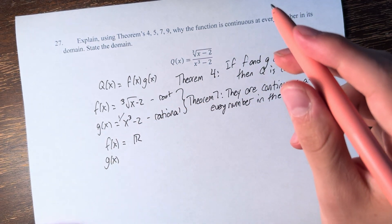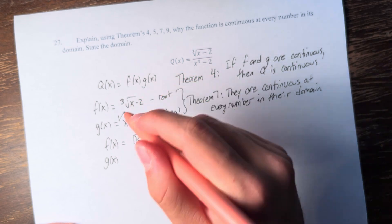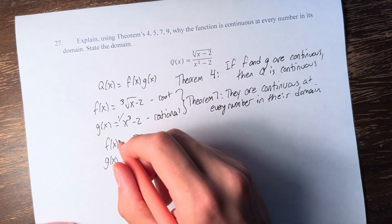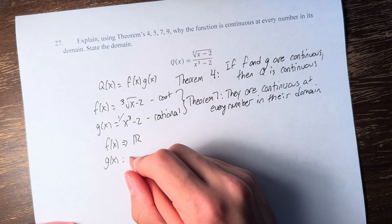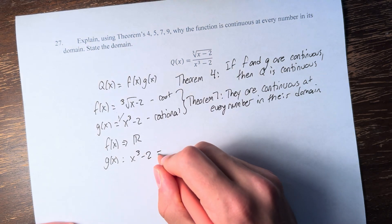g of x is a rational function, 1 over x cubed minus 2. And the domain restriction is therefore that the denominator, x cubed minus 2, cannot equal 0.